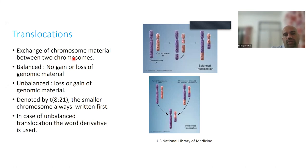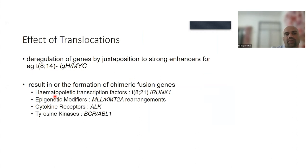Translocation is exchange of material between two chromosomes. A balanced translocation has no gain or loss of material, and unbalanced has loss or gain of genomic material. What is the effect of a translocation? A translocation can cause deregulation of genes by juxtaposition to strong enhancers, for example in the 8;14 translocation wherein the IGH enhancers lead to overexpression of the MYC gene. Or you could have chimeric fusion transcripts. These fusion transcripts could affect transcription factors like in 8;21 the RUNX1, or affect epigenetic modifiers like the KMT2A or MLL gene. Translocations can affect cytokine receptors like the ALK gene in ALCL, or tyrosine kinases like BCR-ABL1.